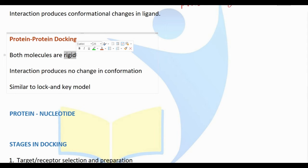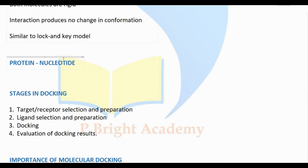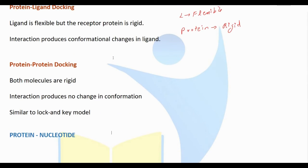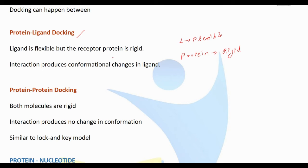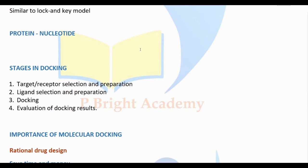We can use this type of docking for small drug molecules, but larger molecules like proteins can also interact. There is also protein-nucleotide docking. In the stages of docking, we can identify four main points. The first one is target or receptor selection and preparation.